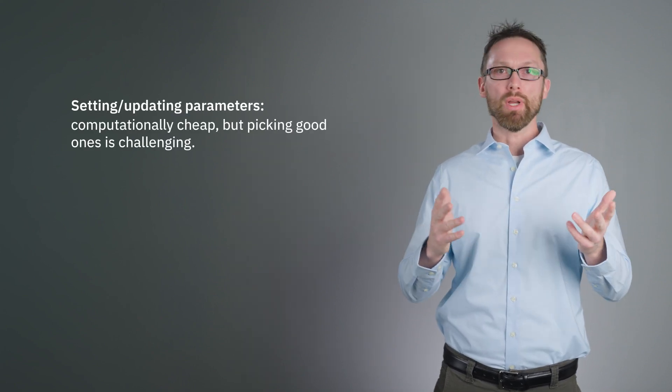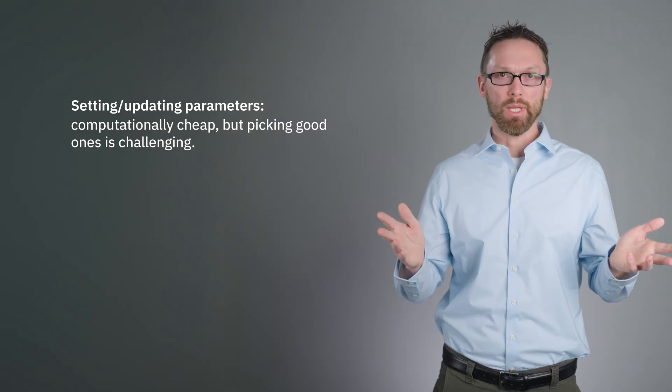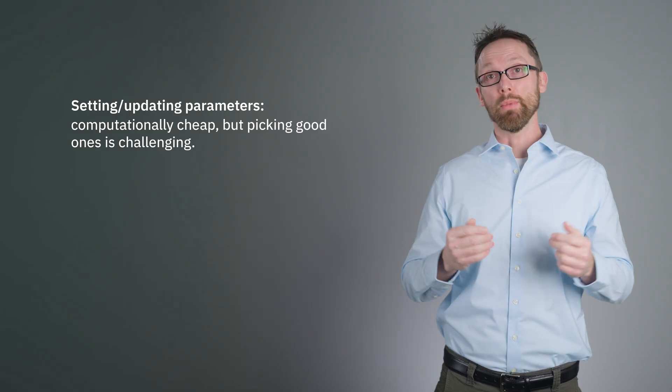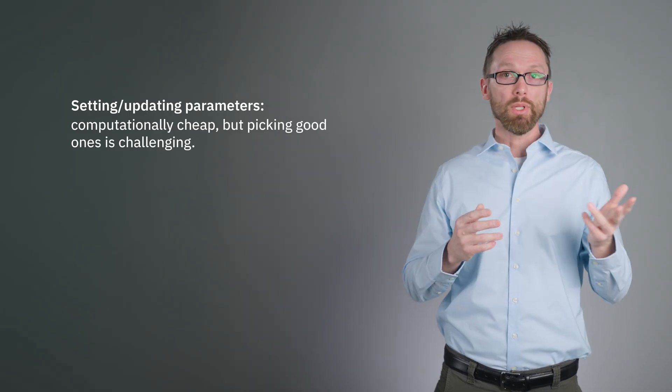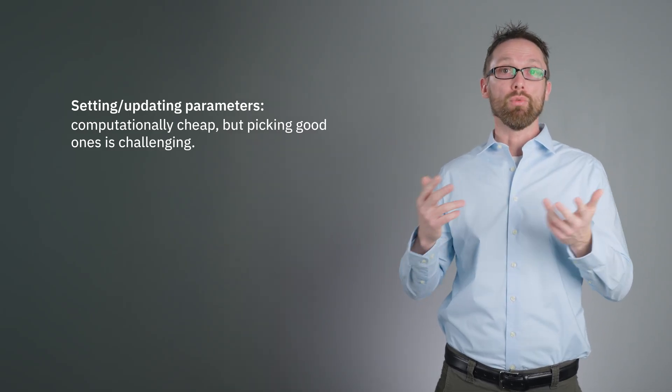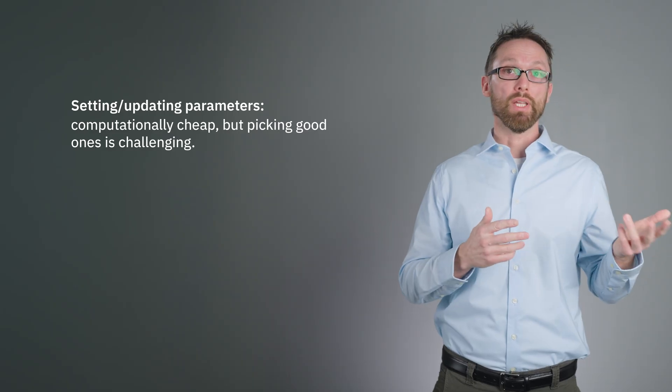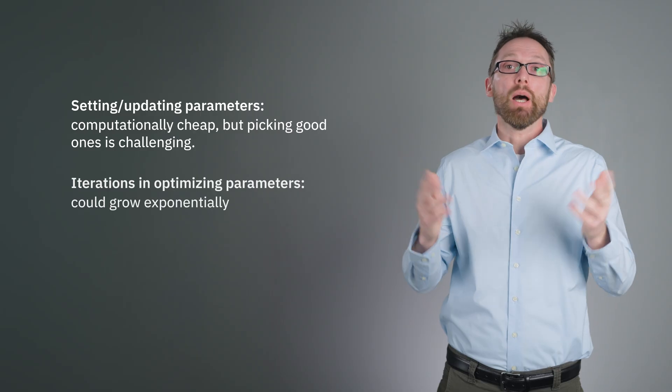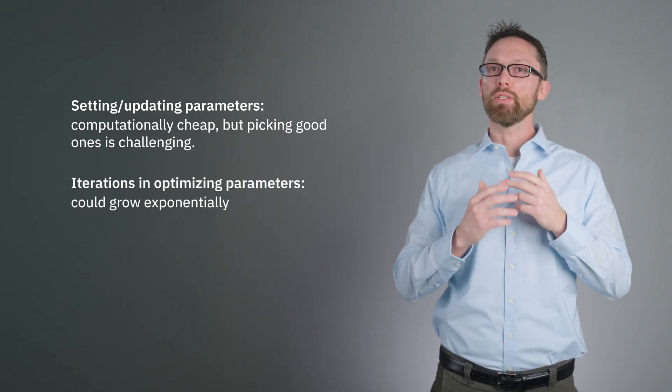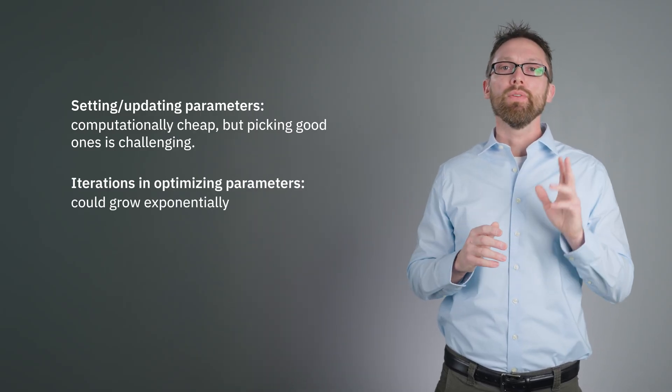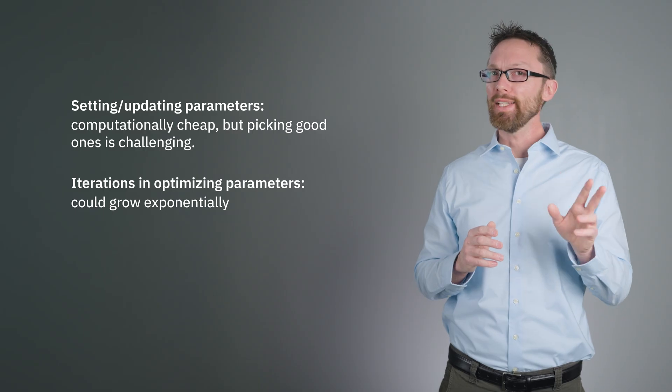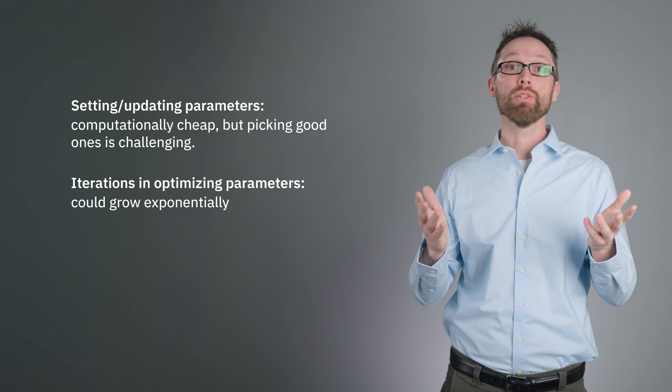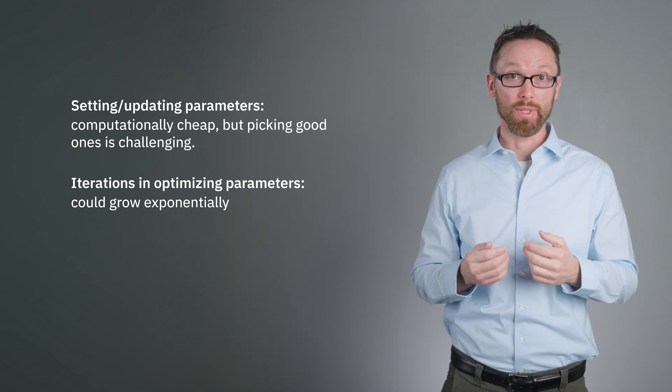Setting or updating parameters is computationally easy. The difficulty there is in selecting useful, physically motivated initial parameters. Using accumulated information from prior iterations to update parameters in such a way that you approach the ground state is non-trivial, but classical optimization algorithms exist that do this quite efficiently. This classical optimization is only expensive because it may require many iterations. In the worst case, the number of iterations may scale exponentially with n.